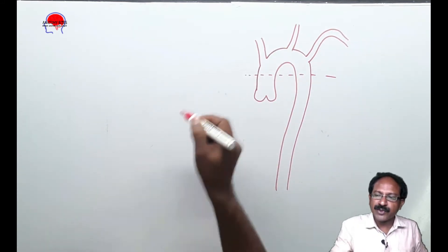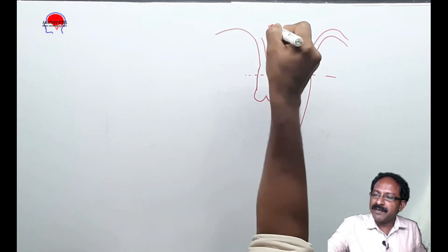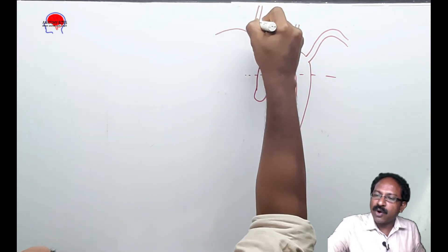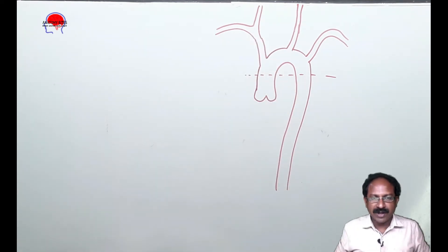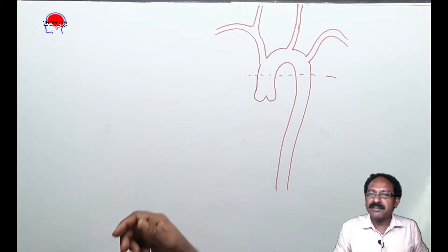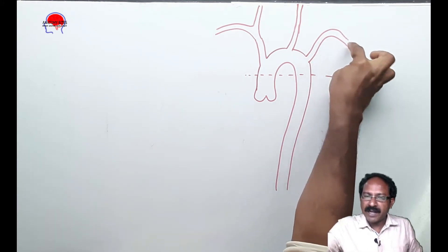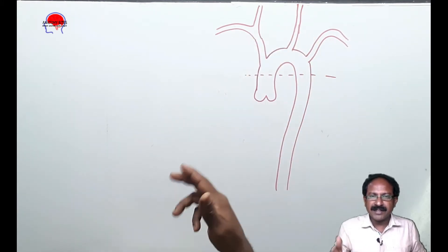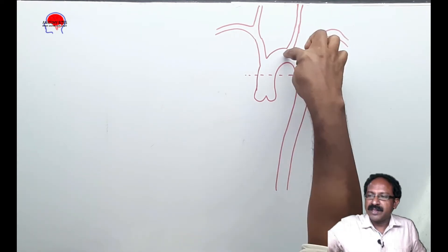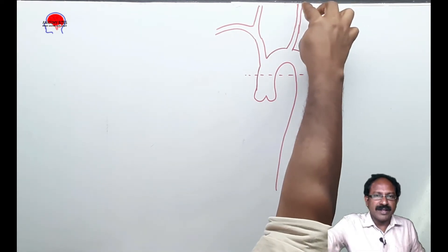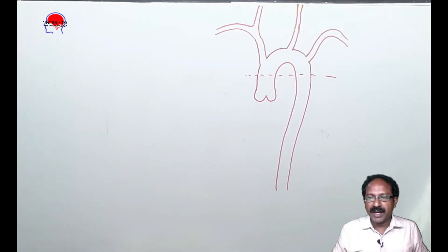The brachycephalic trunk gives the right subclavian artery and the right common carotid artery. As the name denotes, the brachycephalic trunk supplies the upper limb as well as the head. The left subclavian, as the name says, passes beneath the clavicle and supplies the upper limb. The left common carotid artery is a direct branch of the arch of aorta.